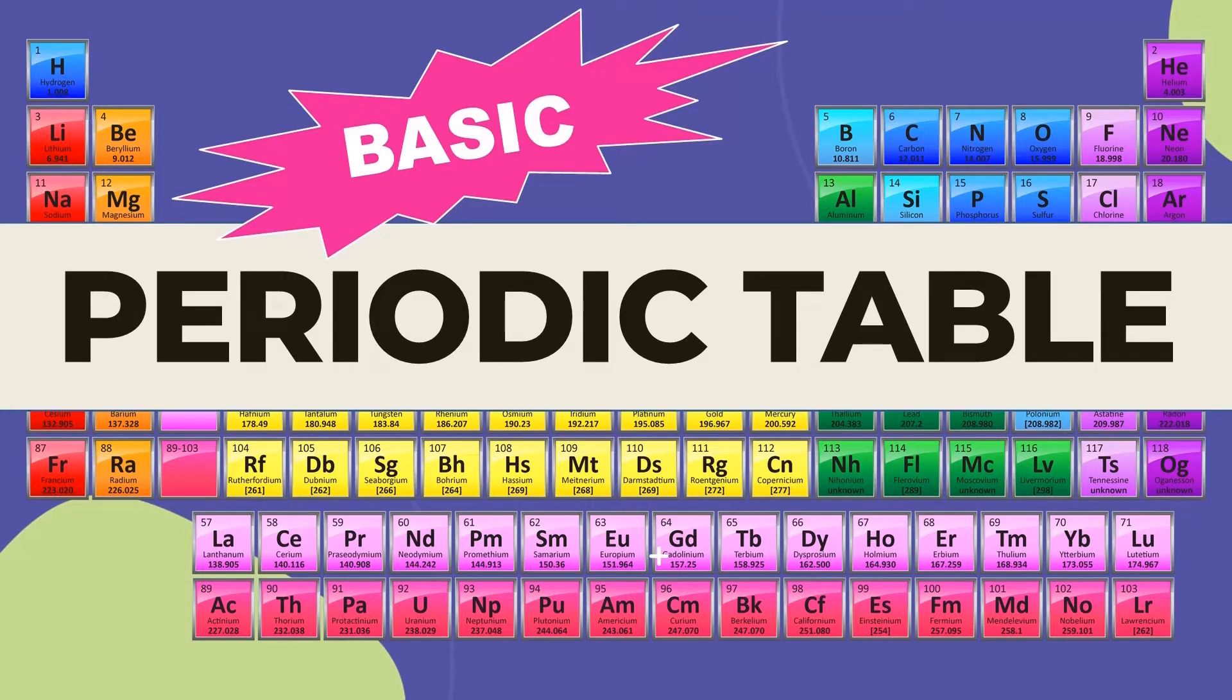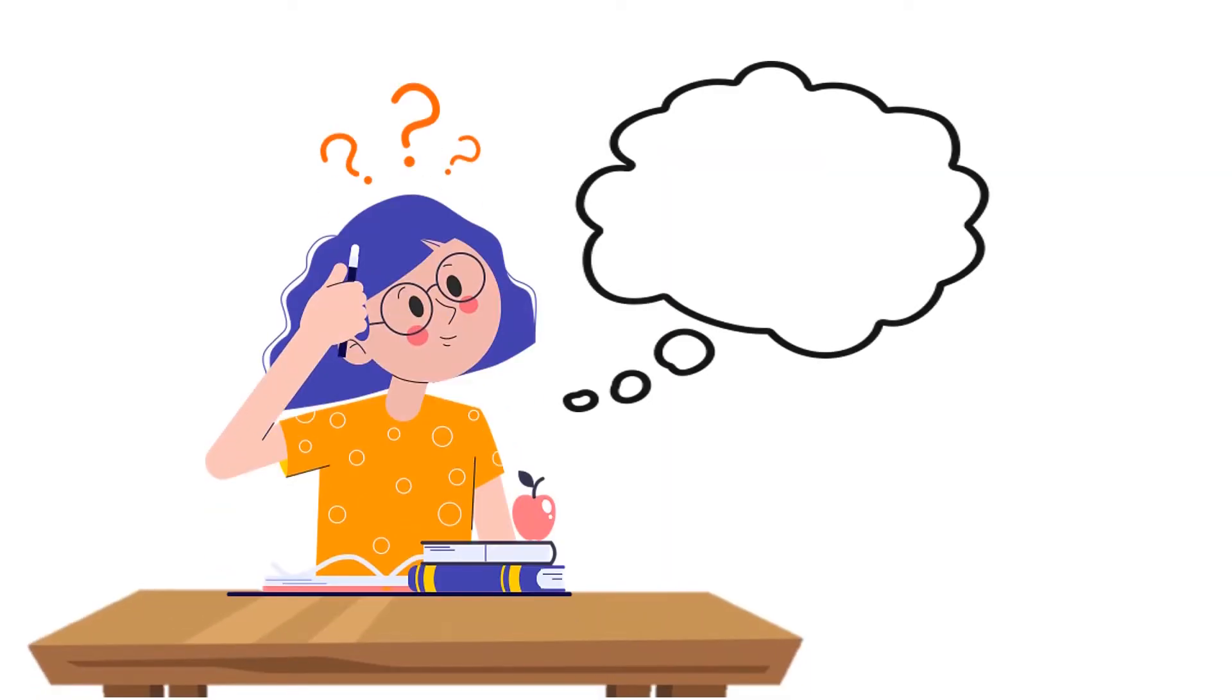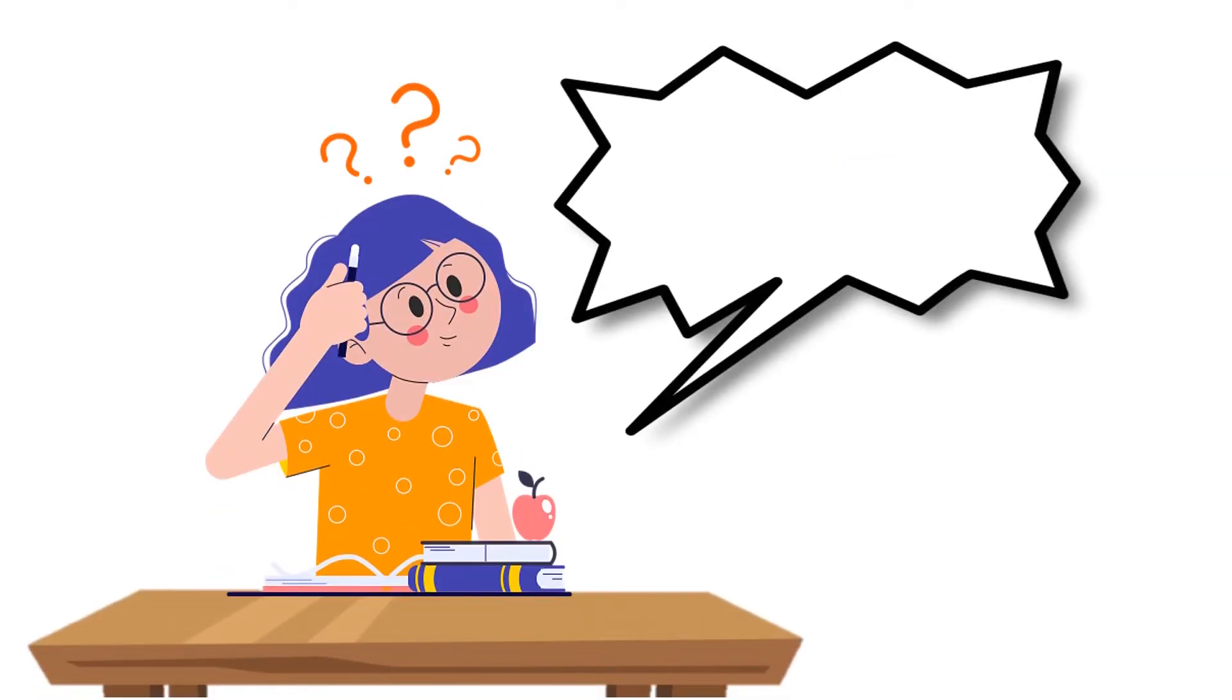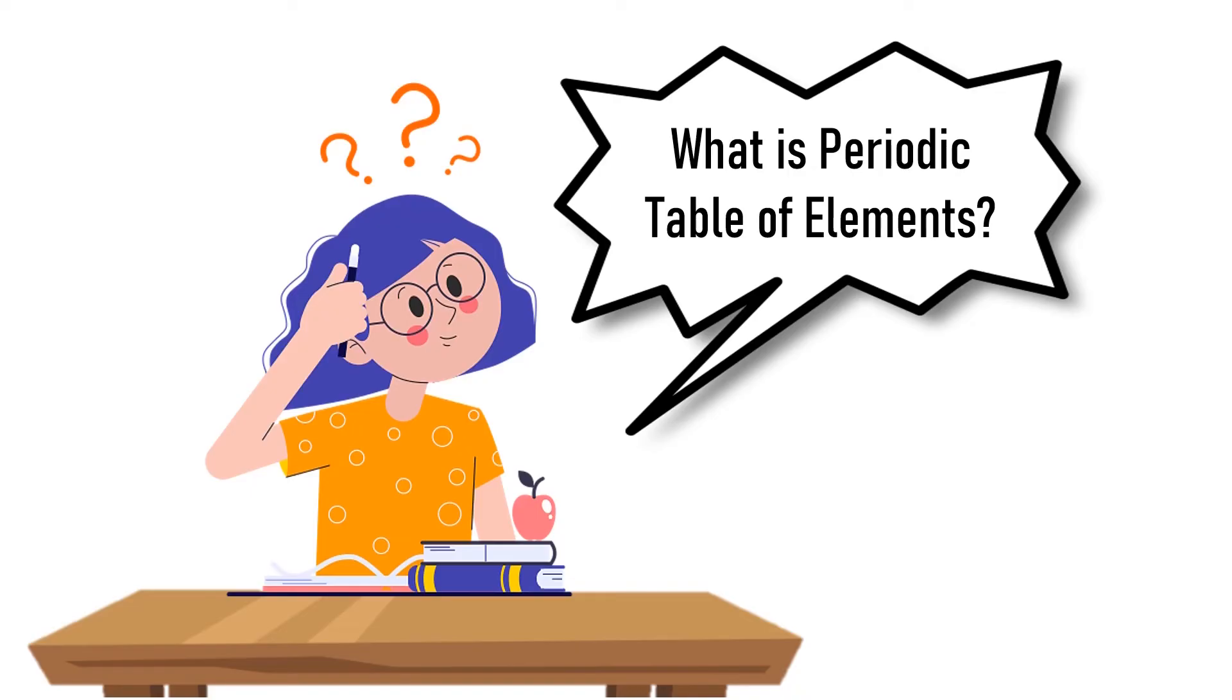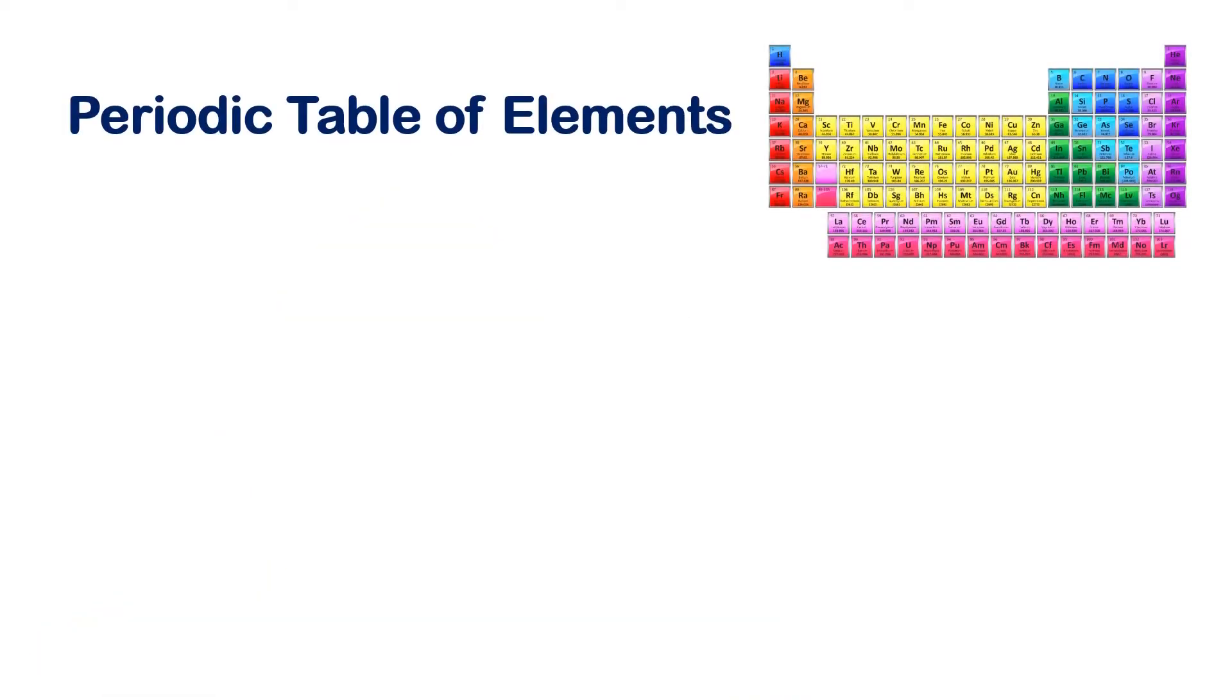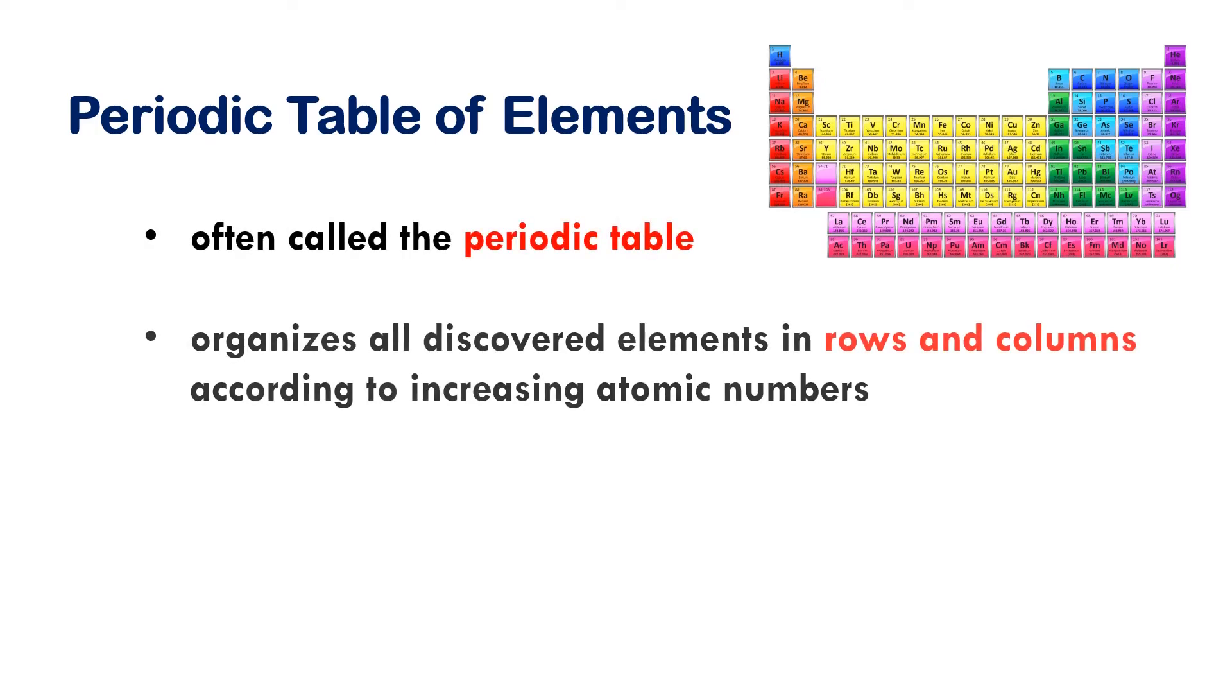Periodic Table of Elements, often called the periodic table, organizes all discovered elements in rows and columns according to increasing atomic numbers.